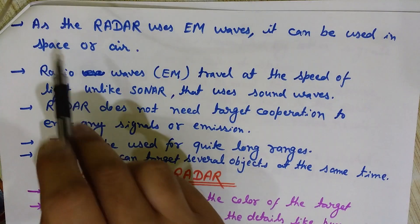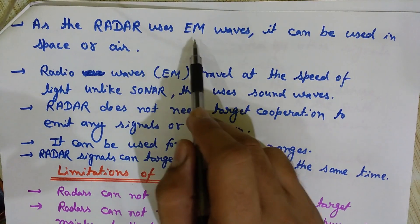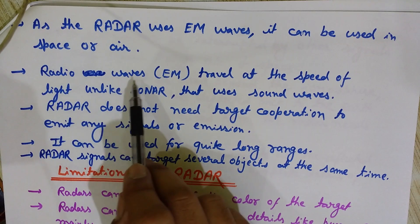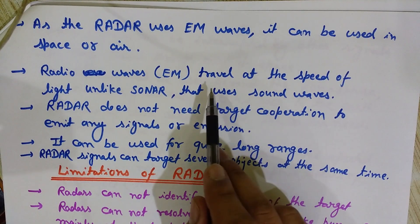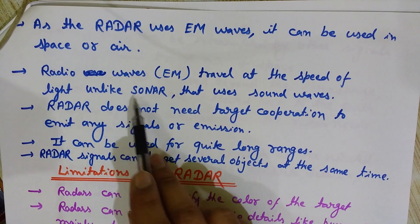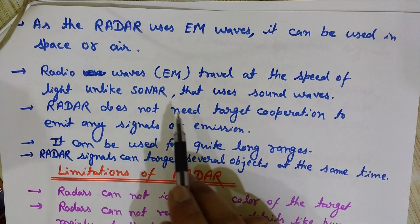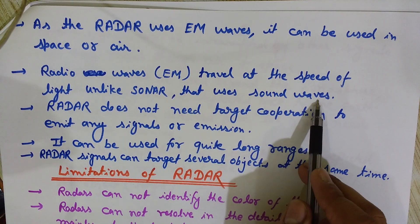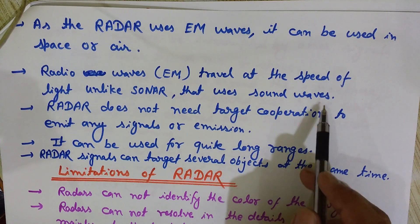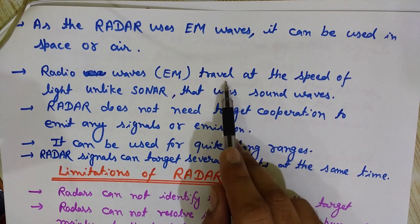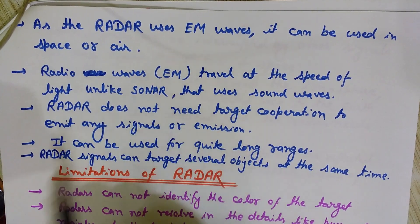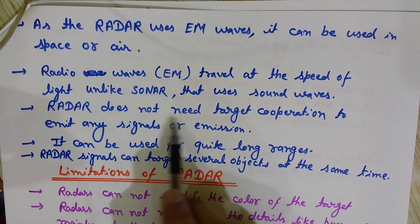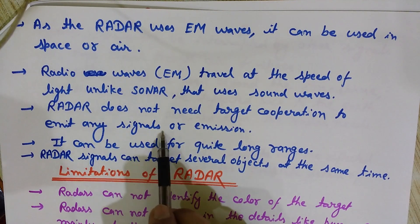Radar uses electromagnetic waves that can be used in space or air. These radio waves travel at the speed of light, because electromagnetic waves travel at the speed of light. In contrast, sonar uses sound waves, and the speed of sound is much smaller than the speed of light, so radar works much faster than sonar. This is a big advantage over other similar equipment.